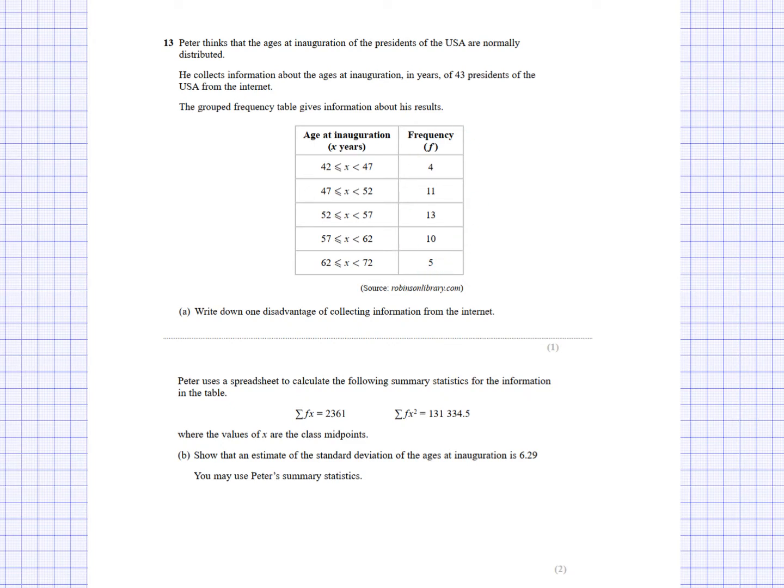Now the other part that will be important to us for question C is this part here. So Peter uses a spreadsheet to calculate the following summary statistics for the information in the table. So the sum of fx is equal to 2,361. So this is really adding up the ages of all the 43 presidents. And also we are told that the standard deviation is 6.29. Now in question B, you need to show how they've worked out that the standard deviation is 6.29. And question C would require us to use some of this and some of that. So I'm going to go there now.